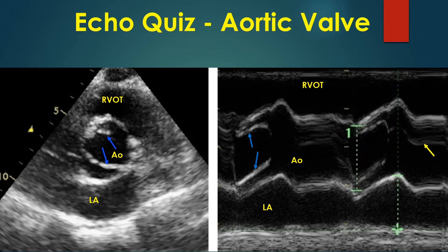Two-dimensional parasternal short axis image shows the aortic valve in cross section, with right ventricular outflow tract anteriorly and left atrium posteriorly. The aortic valve is in open position and two leaflets have been marked by blue arrows.